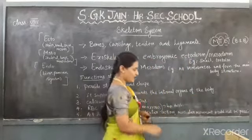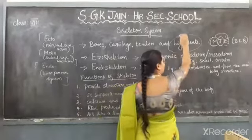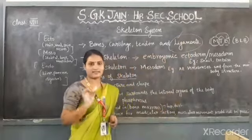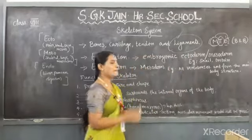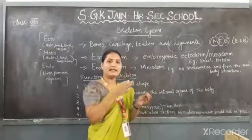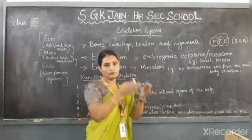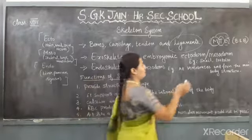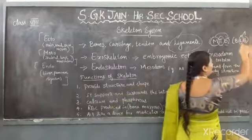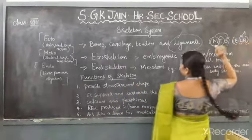Ligaments are also a fibrous cord-like structure which connect bone to bone. A ligament acts as a bridge to connect bone to bone.